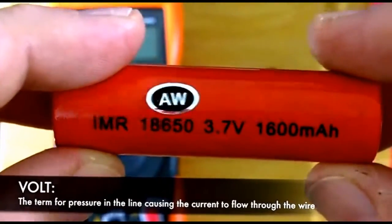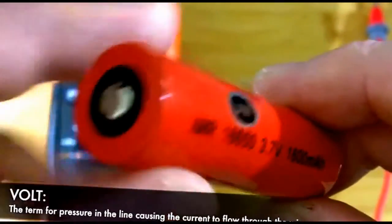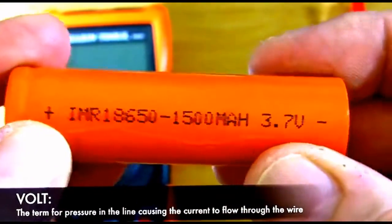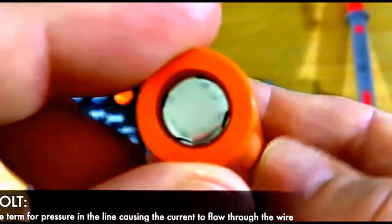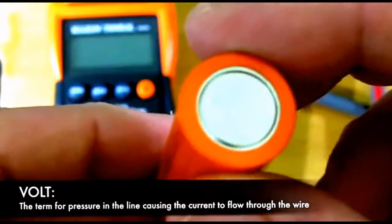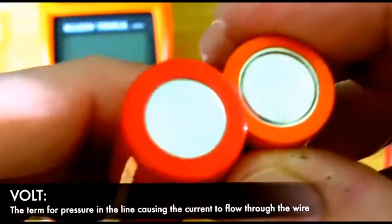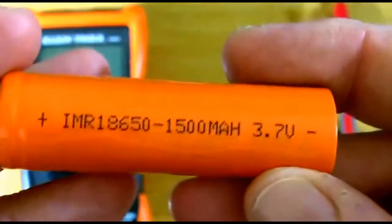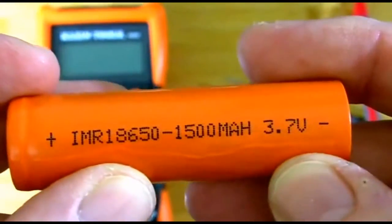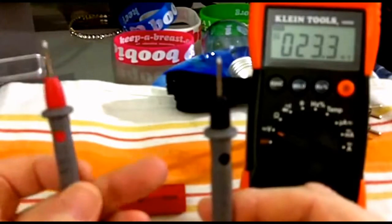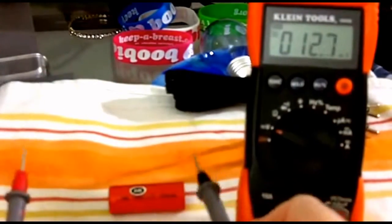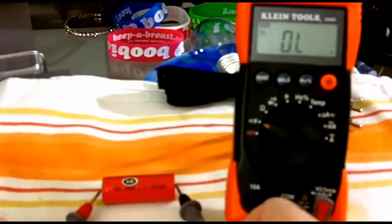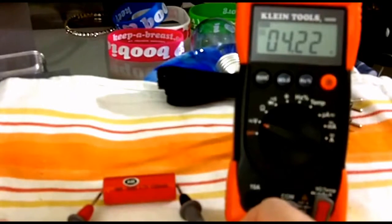Now all batteries have a negative and positive end, which is in the direction in which the power flows. We're measuring the pressure of that power, causing it to flow through the line. Now negative, positive will usually be the nipple end. If there is no nipple, the battery will usually be marked negative or positive. So ground to negative. So you're going to put your black tip to the negative end and your red tip to the positive end or the nipple.